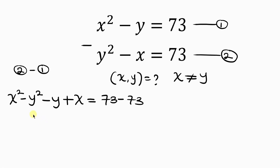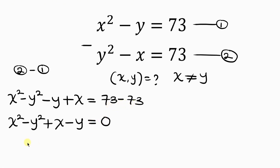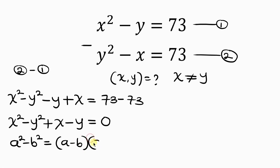Now let's arrange the left hand side. We have x squared minus y squared, and then plus x minus y, equal to 0. Notice that there is a property of difference of two squares: a squared minus b squared equals a minus b times a plus b.